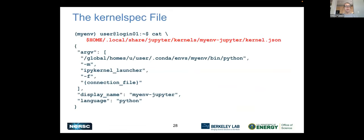What the kernel spec file looks like: it's a JSON file. It gets created in a hidden path in your home directory that Jupyter knows to look for. It basically tells Jupyter to use a specific instance of Python — the Python binary found in your conda environment — and has some scaffolding to launch the kernel. You can also change the display name to something more meaningful, and it tells Jupyter what language you're working with. This is pretty basic, all things considered.